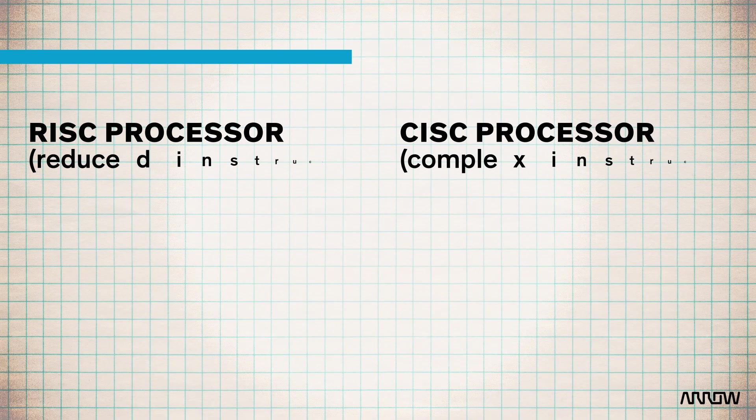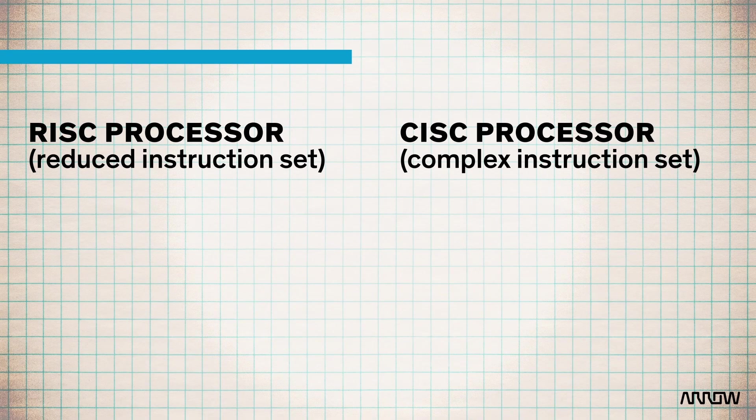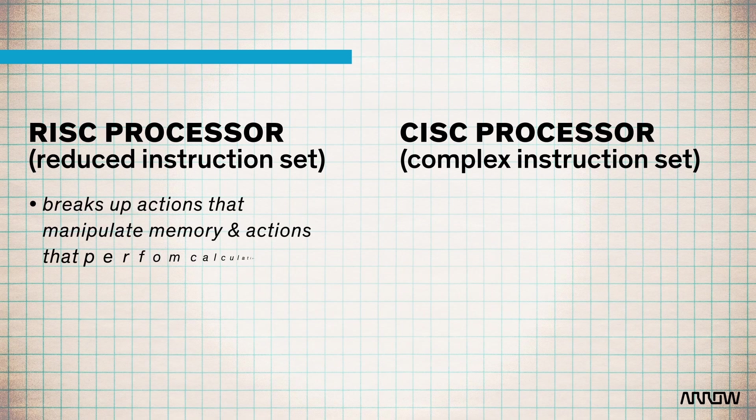A reduced instruction set processor breaks up the actions that manipulate memory — so translating from a register to memory versus register-to-register actions.